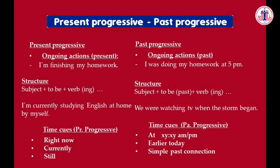Time cues for the present progressive include: 'right now,' 'currently,' and 'still' — though 'still' can be used for both tenses. For the past progressive, we use time cues like 'at 5 p.m.,' 'at 3:30 a.m.,' 'at a specific moment in the past,' or 'earlier today.' We can also connect with the simple past using 'when,' as in 'when the storm began.'